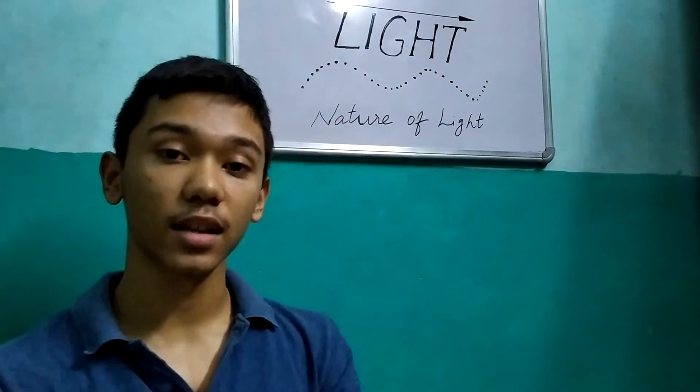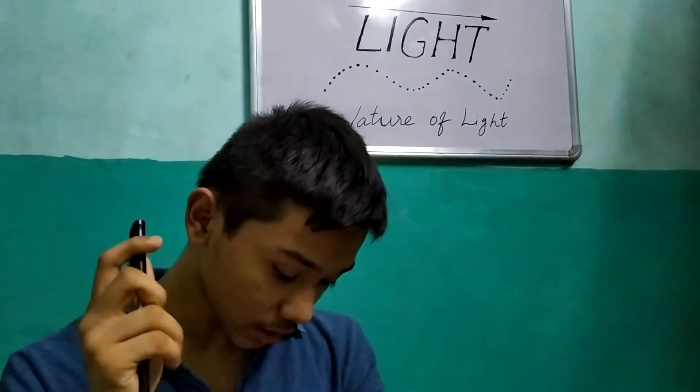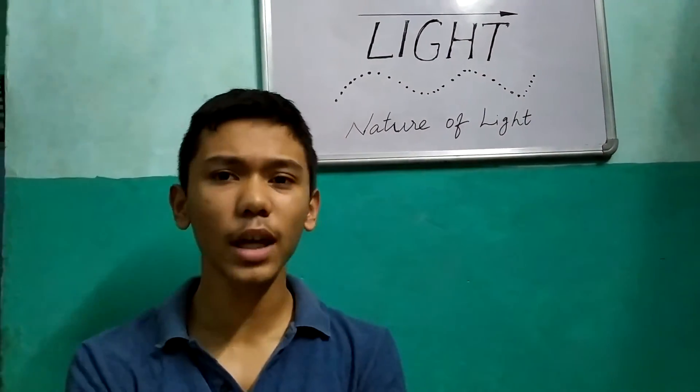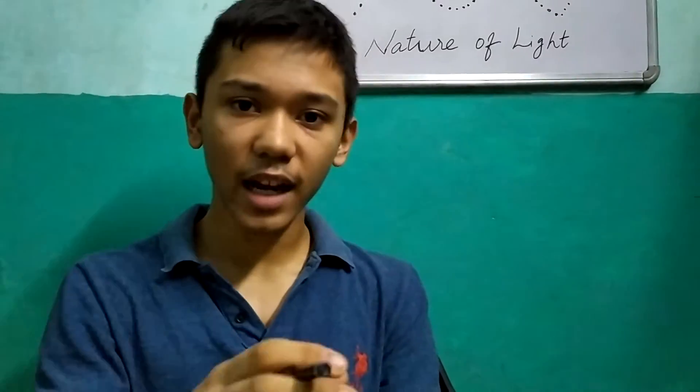That's what Newton believed. Now there was another guy, Christiaan Huygens. He was a contemporary of Newton, and he believed that light may not be related to corpuscles — it might propagate as waves. We do not see the wave nature of light because the objects we deal with are really big compared to the wavelength of light. This idea remained dormant for many years, and then came a guy called Thomas Young, who did something called Thomas Young's double slit experiment.